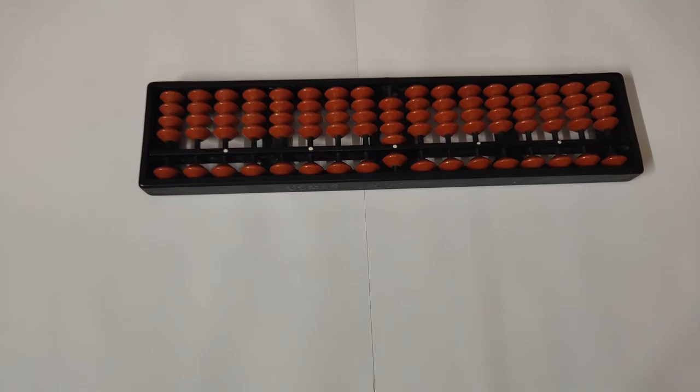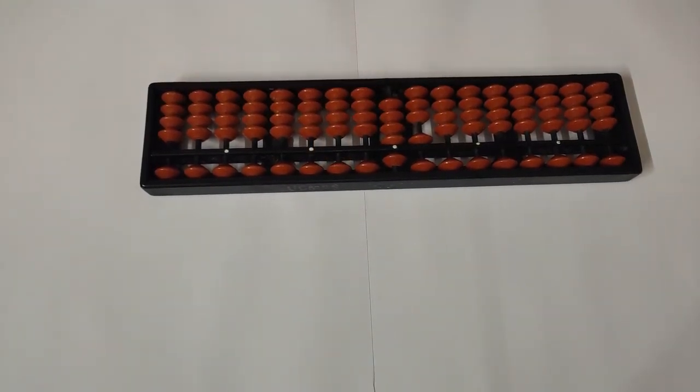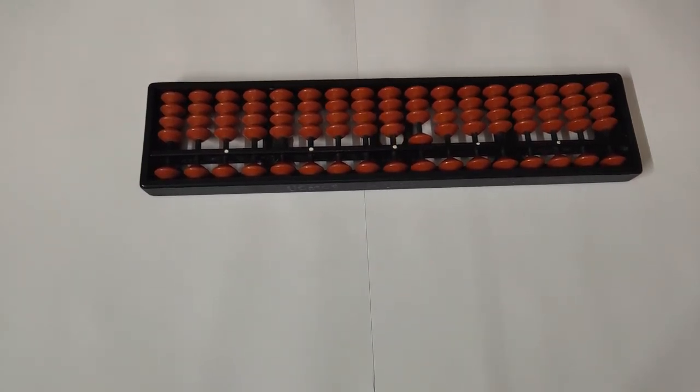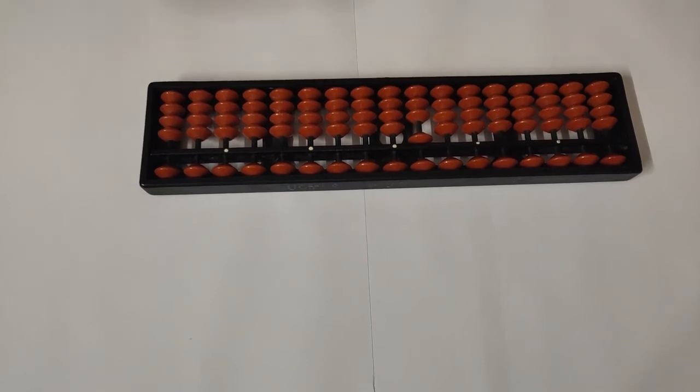Ten is basically one and zero. To represent one and zero, in the tens place we will put one bead up, and we will remove all the beads in the one's place. So this is zero. One and zero, which is basically ten. So friends, that's it for today's video.